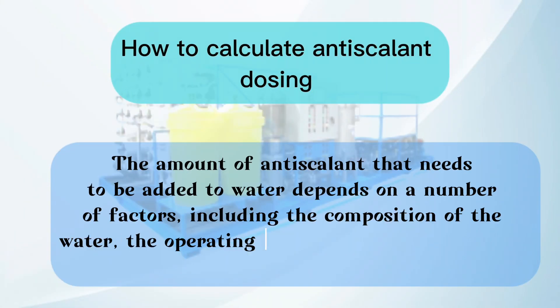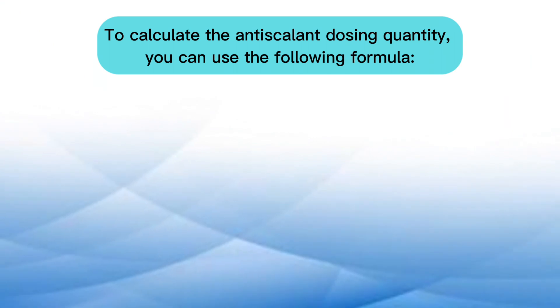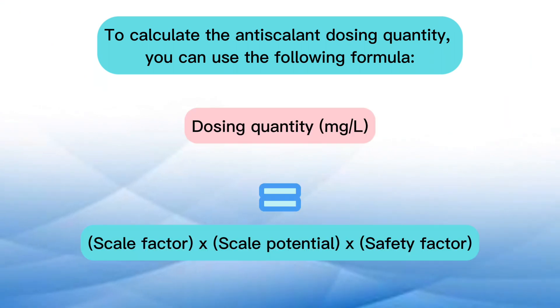How to calculate antiscalant dosing quantity. The amount of antiscalant that needs to be added to water depends on a number of factors, including the composition of the water, the operating conditions of the RO plant, and the type of antiscalant being used. To calculate the antiscalant dosing quantity, you can use the following formula: Dosing quantity (mg/L) = Scale factor × Scale potential × Safety factor.